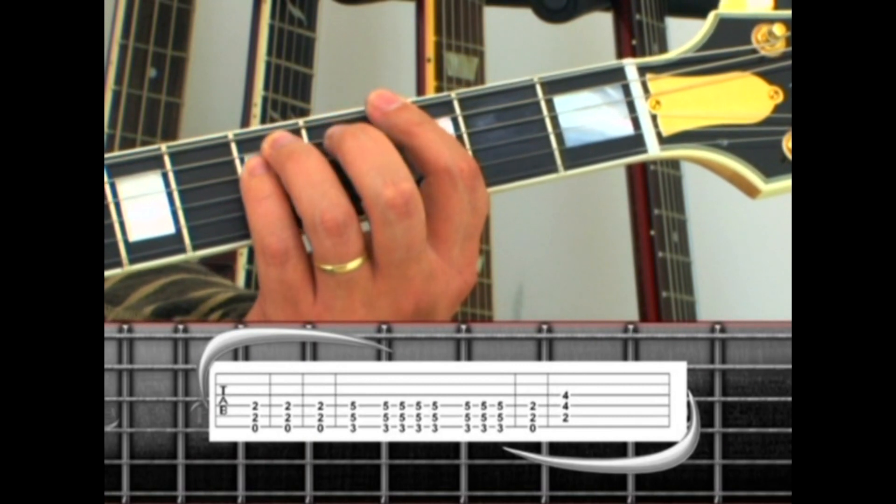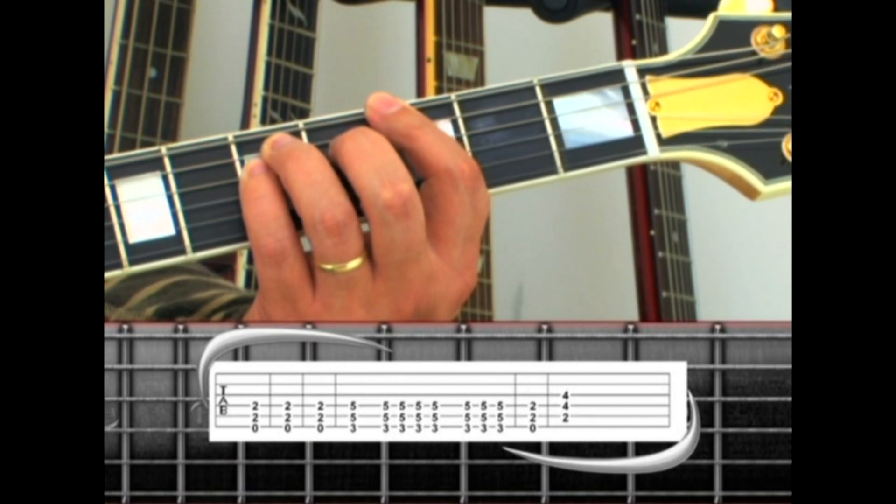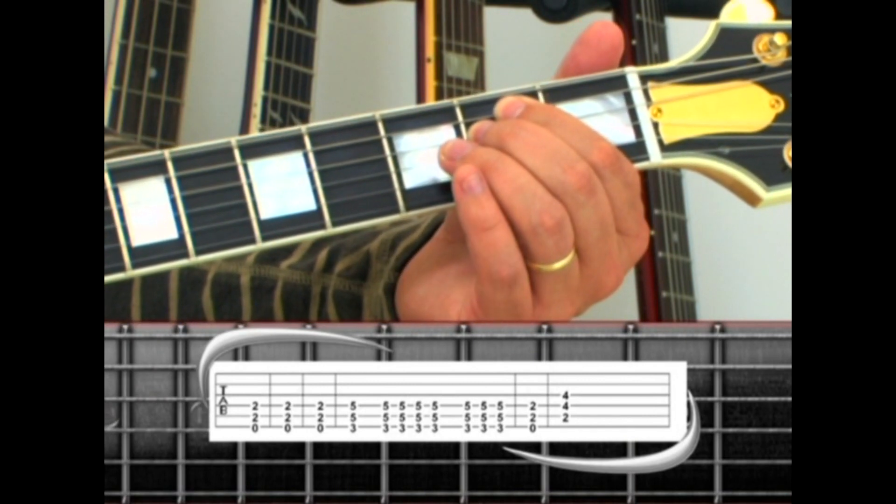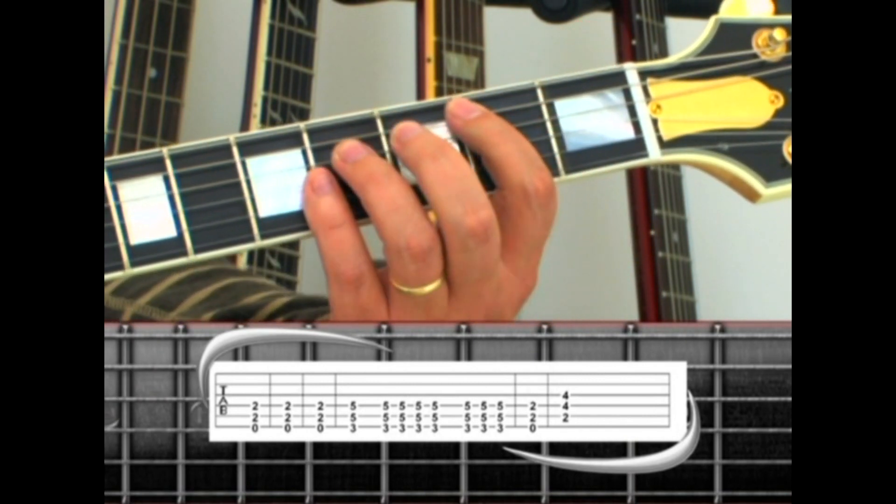The count is 1, 2 and a, 3, 4 and a, then back to E5, and end on B5.